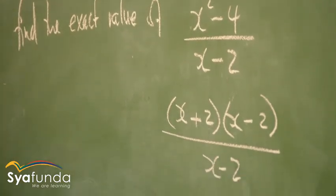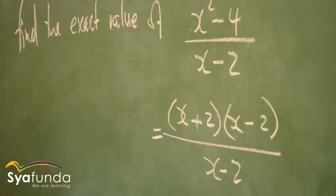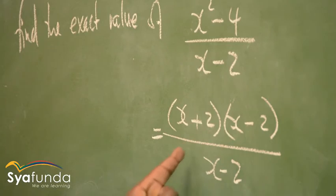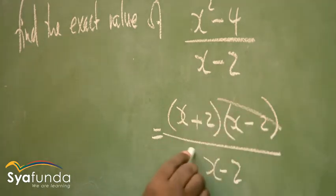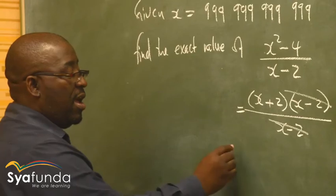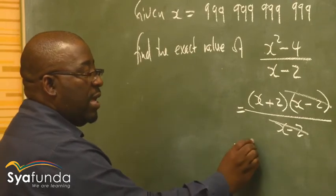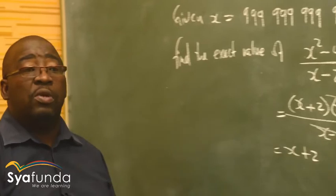This is where your eyes come in handy. I can see that (X - 2) in the numerator is exactly the same as (X - 2) in the denominator, so they cancel each other out. What I am left with is X + 2.